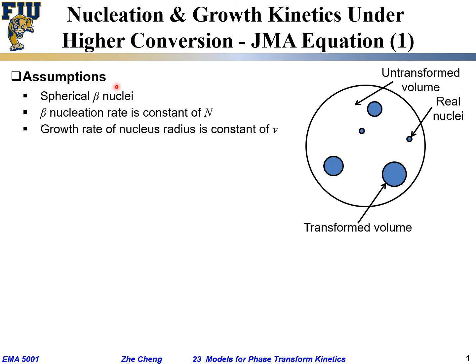Let's start with assumptions similar as before. We have three basic assumptions. First, spherical nuclei — when they form they are sphere-shaped and as they grow, they grow three-dimensionally into larger spheres. Second, the beta precipitate nucleation rate is constant: per unit time per unit volume a fixed number N of new nuclei are formed. Third, the growth rate of those spherical nuclei is constant — specifically the radius grows linearly with time, so dr/dt equals a constant v.